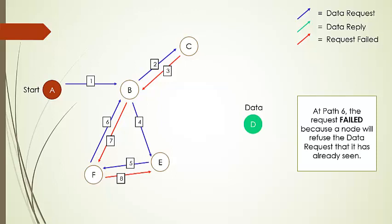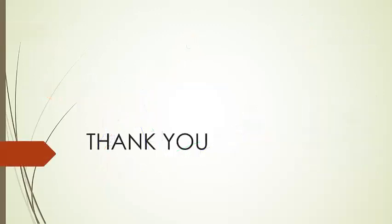Now E sends the request to D, which has the data. Then D will reply back to E, from E to B, and finally B to A. Now I have the desired data. My transaction is at this moment complete, and this clearly explains the Freenet protocol. Thank you.